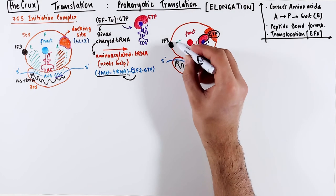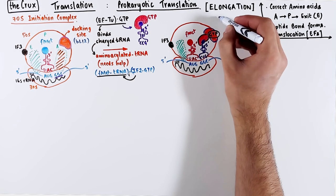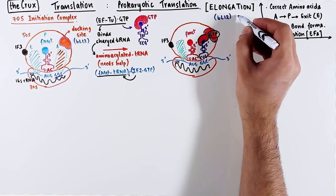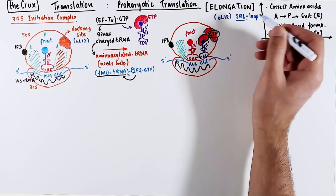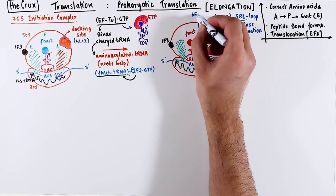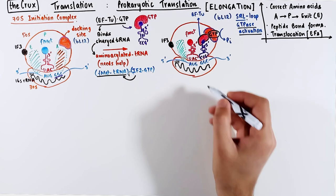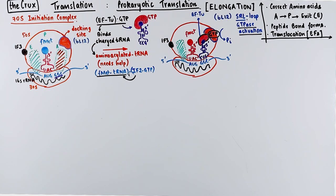Once the elongation factor Tu docks or binds, the BL12 protein has an SRL region, which is essentially a secondary loop structure. This loop activates the GTPase activity off the docking site, and a pyrophosphate is released from the GTP. However, this GTPase activation only occurs when the elongation factor Tu has brought in the correct transfer RNA, so this pairing of codon and anticodon acts like a sensor for the GTPase activity.